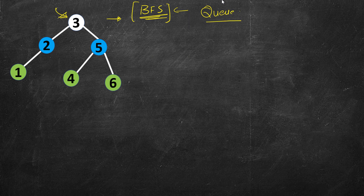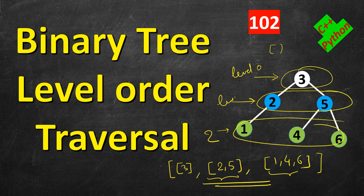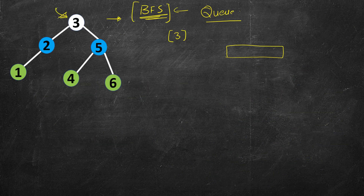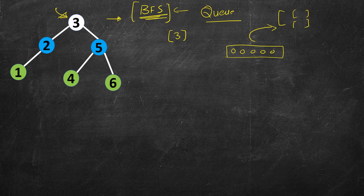There are multiple ways to write this breadth first search approach using a queue. We insert the root, so now in the queue we have node 3. The invariant we have to maintain at the end of each loop iteration is that we insert all the nodes at a given level into a list. We are creating smaller lists and then combining them into a bigger list. A tree will always have one node at level zero — or zero if the tree is empty.